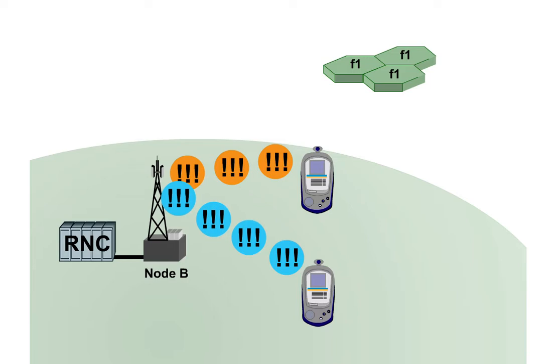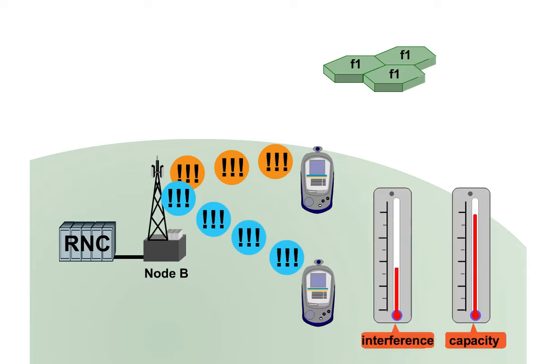Unnecessarily high transmit powers increase the level of interference within a cell and thus reduce the network capacity. Further information about this can be found in Module 5.